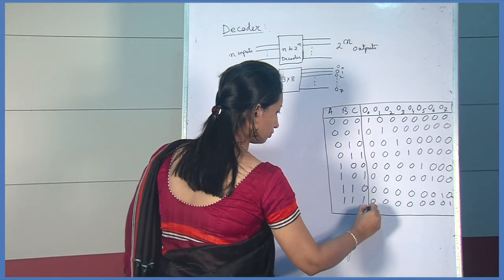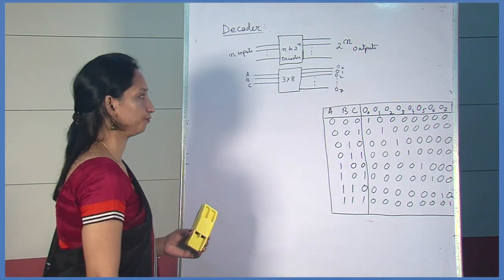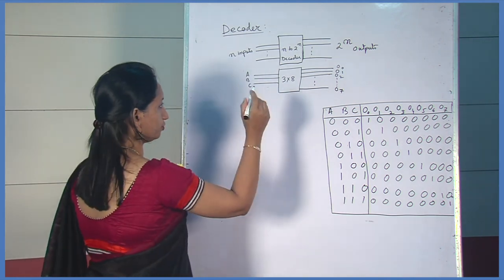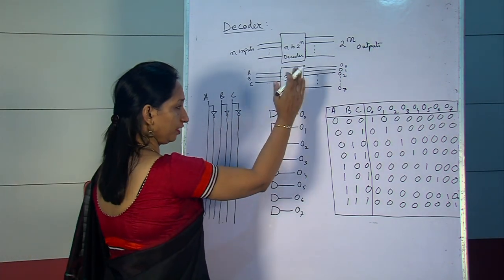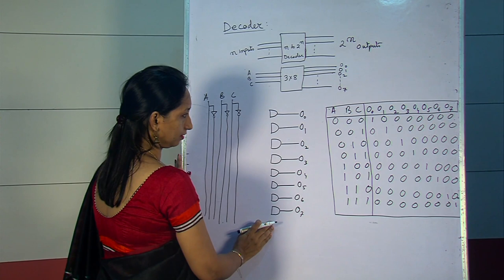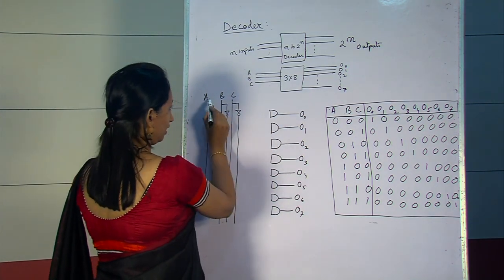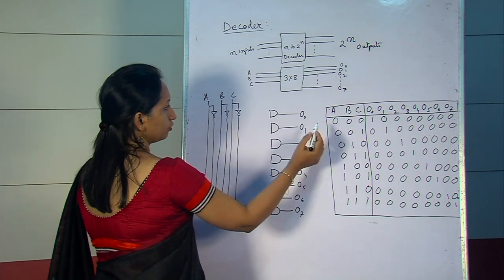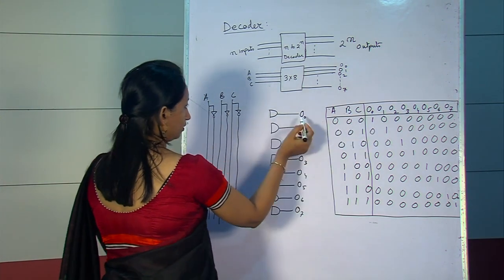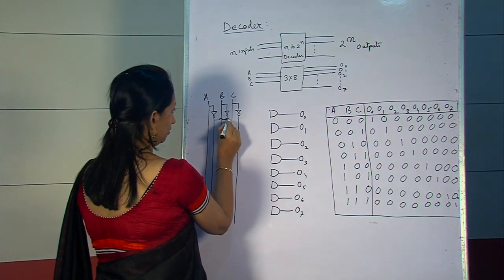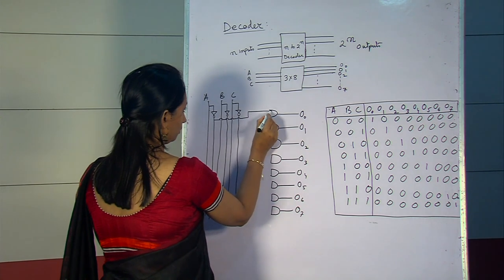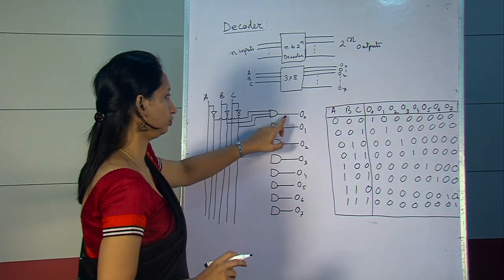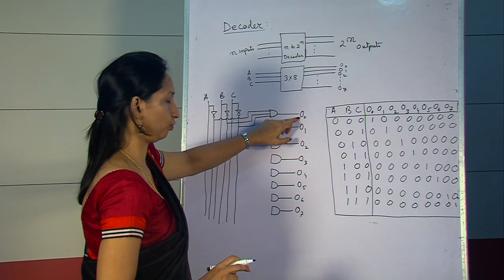Now we see the logic diagram for the 3-to-8 decoder. Since there are 8 outputs, 8 AND gates will be there. The 3 inputs A, B, C are complemented by using NOT gates. For the first combination 0,0,0 — when all 3 inputs A, B, C are 0 — the output of the first AND gate, that is O0, is high and is selected.